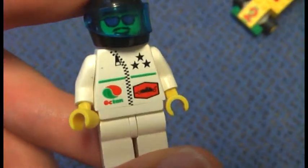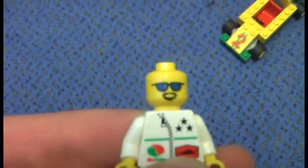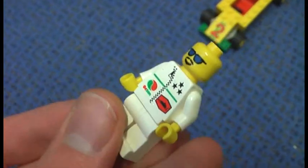And now onto the minifigures. First, the race driver. He is very basic with white overalls, transparent blue visor, and blue sunglasses. No back printing.